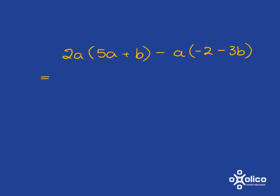Sometimes you have to multiply out and then do some sorting out afterwards. The first thing I want you to always do is check: if you've got a minus sign there, put a nice big mark around it so that you remember to be careful with it. It is so easy to forget that the minus sign must go with both things in the bracket. We've got to apply the distributive law twice here — once for each bracket — remembering the minus distributes as well.